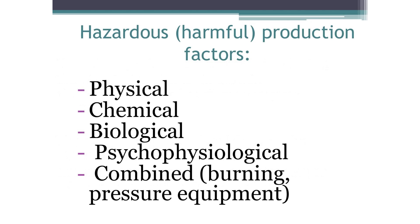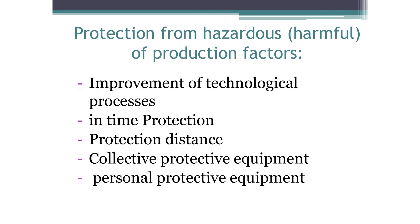Harmful factors are divided into physical, chemical, biological, and psychophysiological — sometimes a combination of all of them is possible. There are several directions for protecting employees from harmful factors: improvement of the technological process (e.g., use of less toxic chemicals); time protection — the employee should not contact harmful substances for a long time; distance protection — the further the employee is from the source, the less harmful the impact. You can also use collective protection equipment, such as a good ventilation system or thick walls, which protect many employees simultaneously against toxic substances and radioactive radiation. Personal protective equipment like gas masks and protective suits protect only one person.